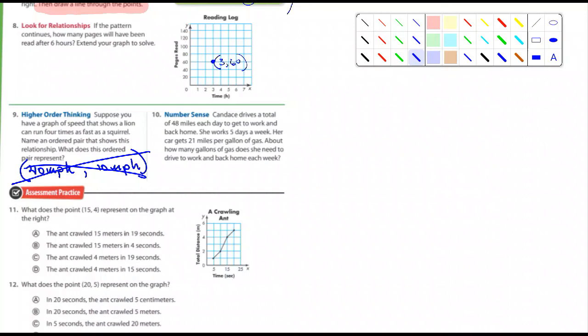Number 10. It says, Candace drives a total of 48 miles each day to get to work and back home. So that's to work and back. She works five days a week. Her car gets 21 miles per gallon of gas. About how many gallons of gas does she need to drive to work and back home each week. Wow, that's a good one. I want you guys to do that. I'm not going to help you with this one. And it'll be worth a stick in a mustache jar.